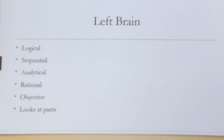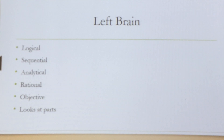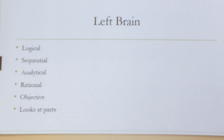Left brain is the logical part of the brain. It likes to think in sequential thinking — the analytical part of the brain. It tends to be the rational, objective part of the brain. It is detail-oriented, likes to look at the different parts. The right brain likes to take a holistic view — looking at the big picture — while the left brain likes the detail-oriented approach, looking at the different parts.